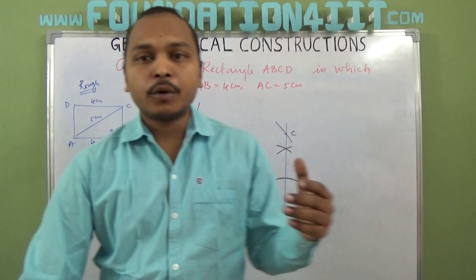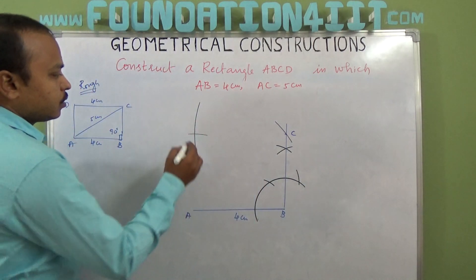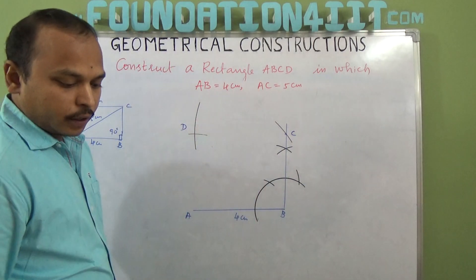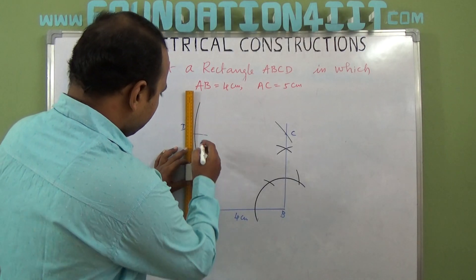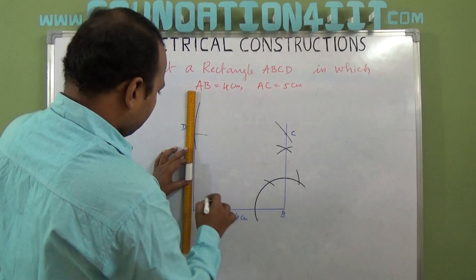That's it. Where they join, the both arcs, there is point D. You can join with scale AB and CD.